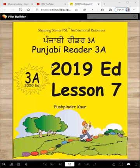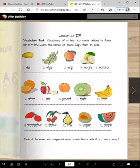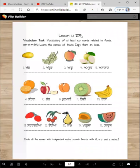Punjabi Reader 3A, 2019 Edition, Lesson 7. Tanyuji Ayanu. Aaj de paath vich asi phalan de naal, phalan de baare vich sikhangi. De ta da teaching standard haaga vocabulary ke tanyu at least 100 words aandini related to food and other names. Phalan de naal sikho.